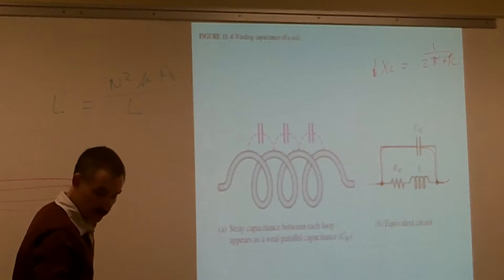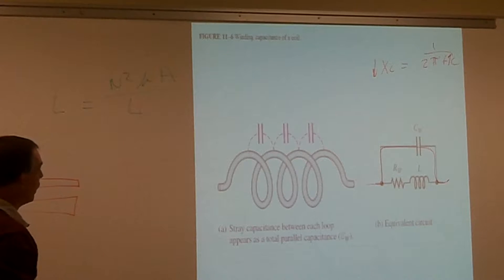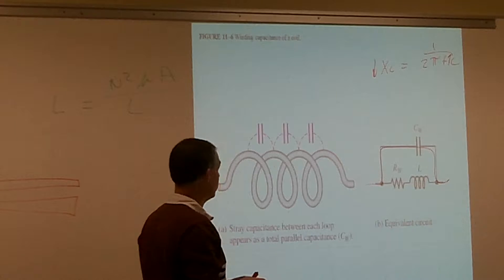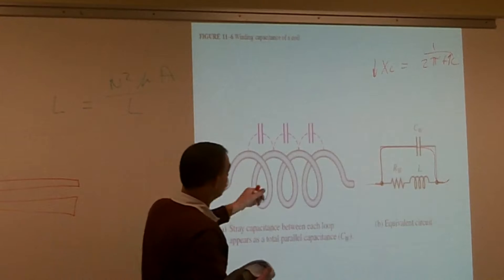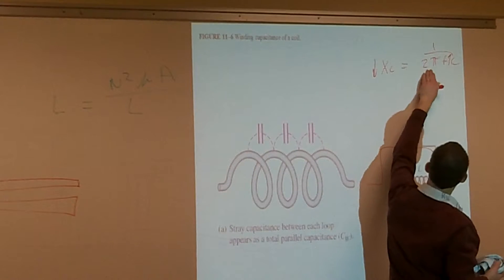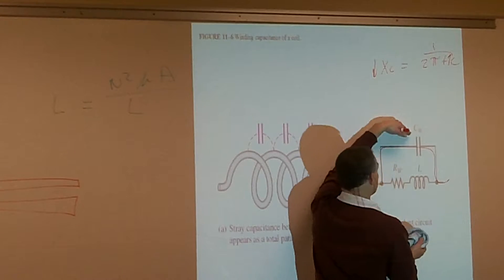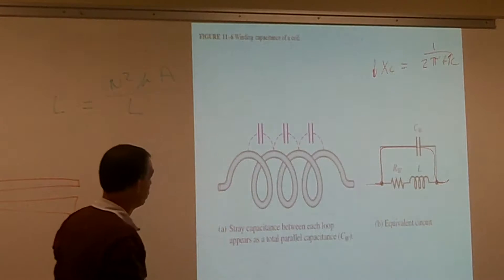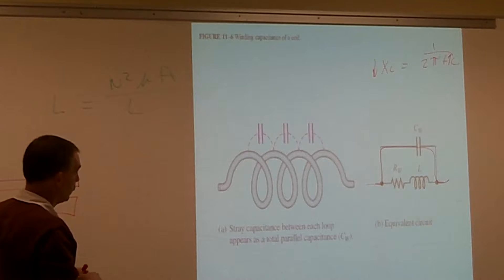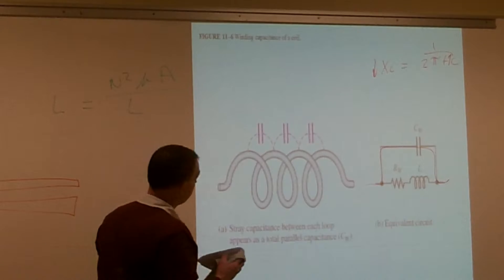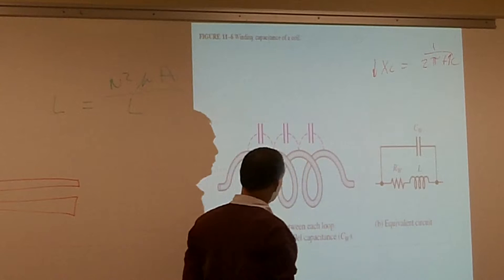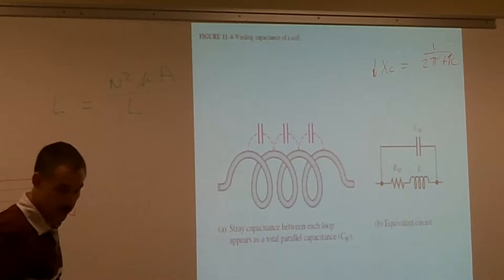I don't think in my time working out there I've ever had to worry about the stray capacitance of an inductor, but it is out there. I always like to use formulas to analyze - what would happen to this circuit? Those are just good formulas we use for troubleshooting and understanding how that stuff works. So we have the stray capacitance and the resistance of the winding; the resistance of the winding we'll deal with in chapter 13.